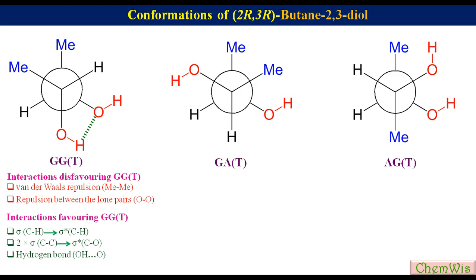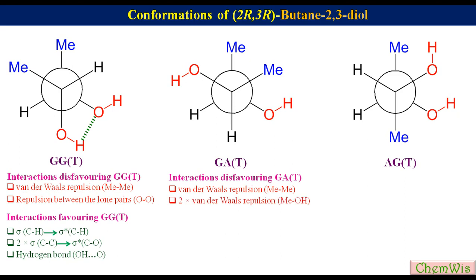GAT has three interactions that disfavor this conformer: van der Waals repulsion between the two methyl groups, and two van der Waals interactions between the methyl and hydroxyl groups. Regarding stabilizing interactions, GAT lacks both the bonding/antibonding orbital interactions and the hydrogen bond interaction.